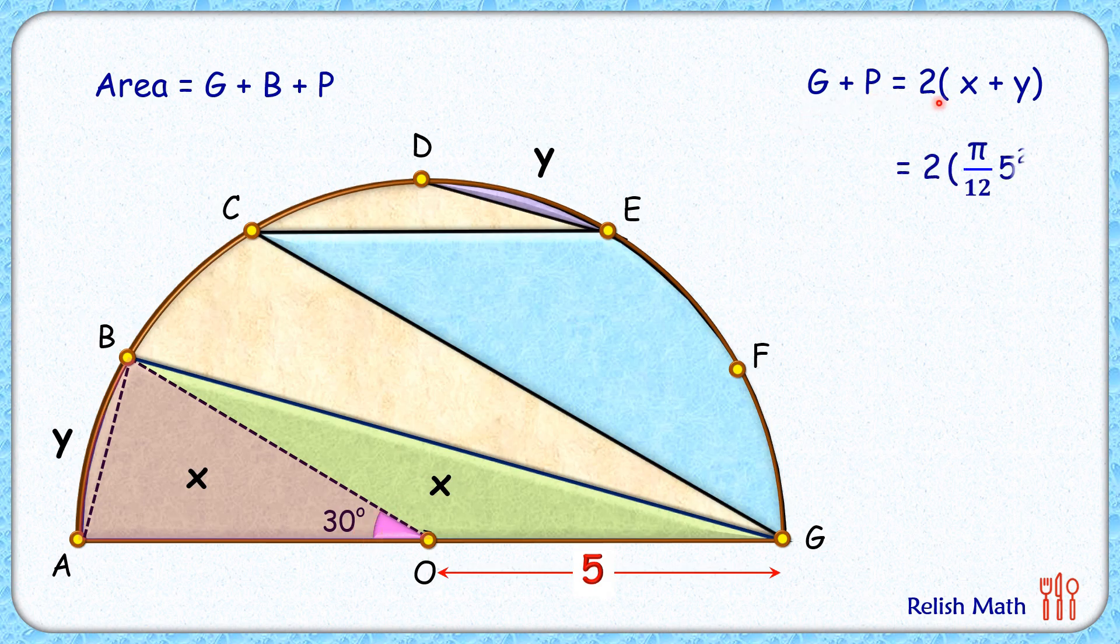So this green plus purple area is 2 times π by 12 times 5 squared, or this green plus purple area is π by 6 times 5 squared.